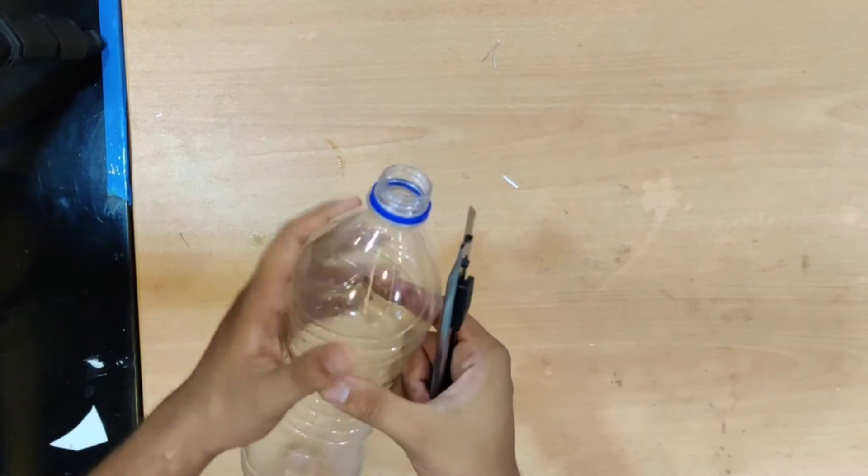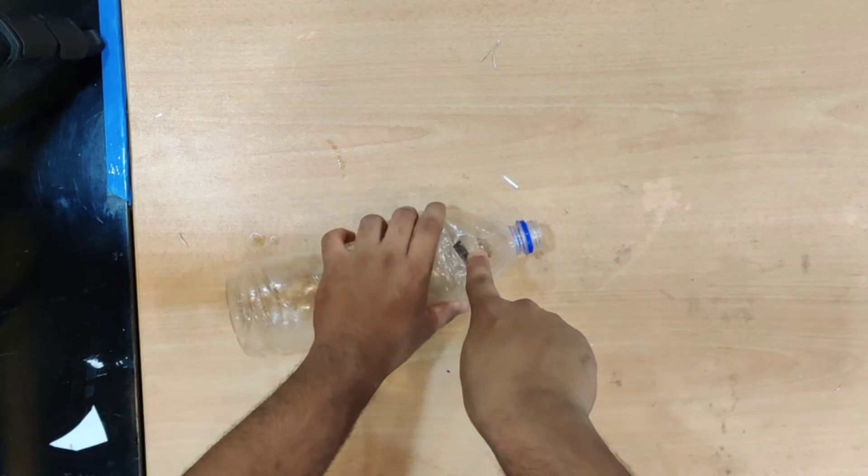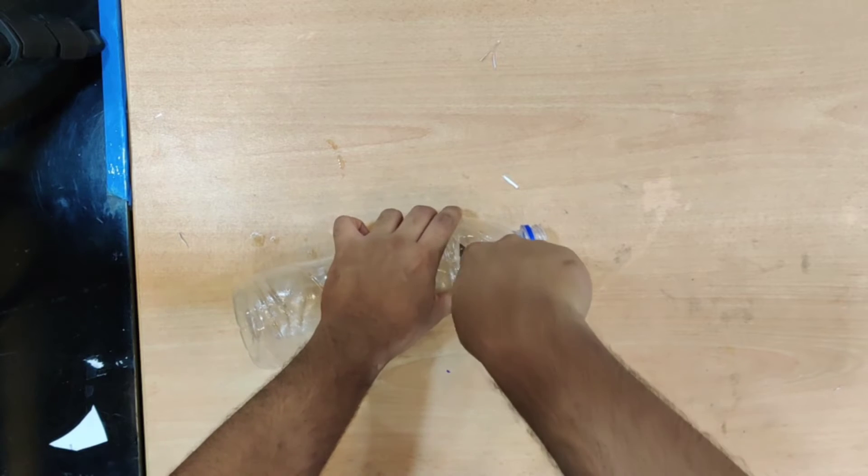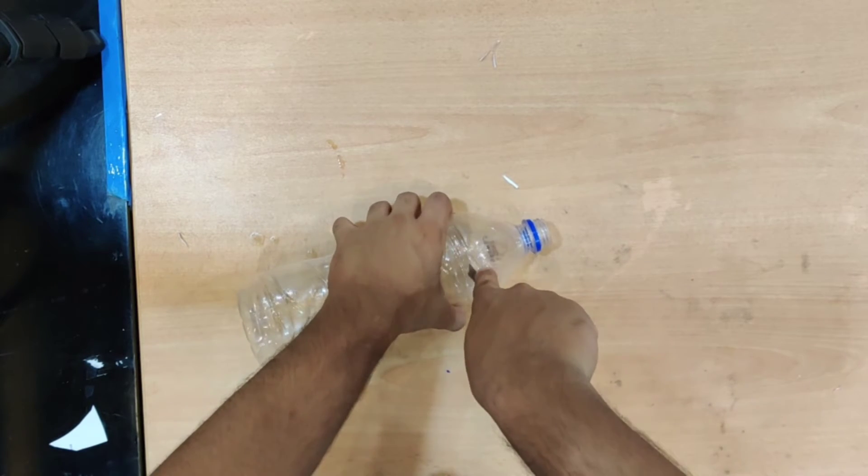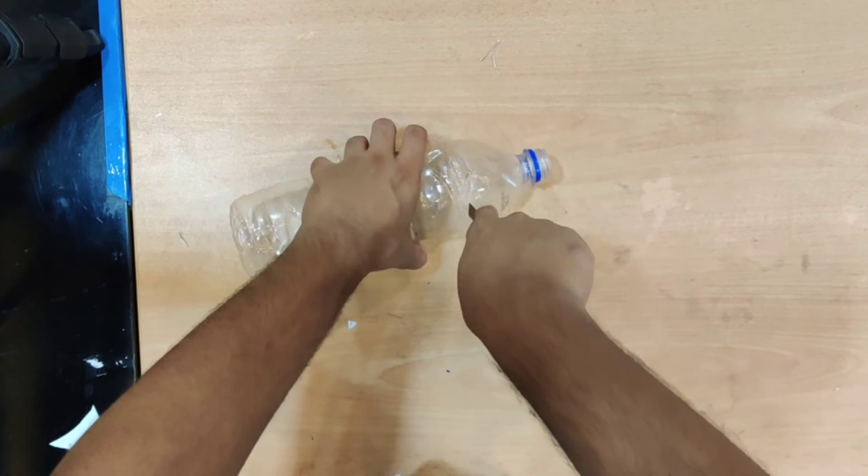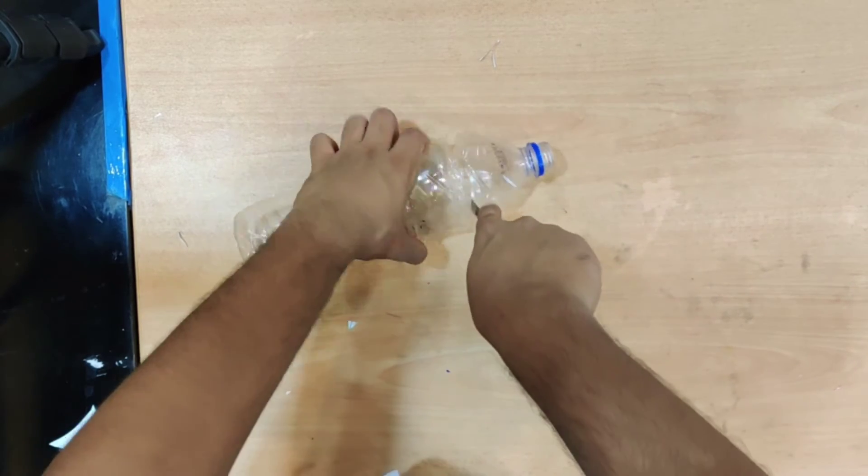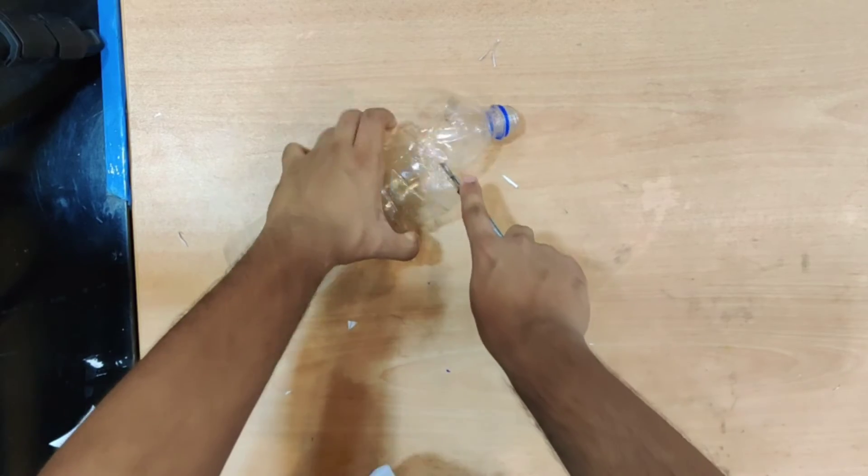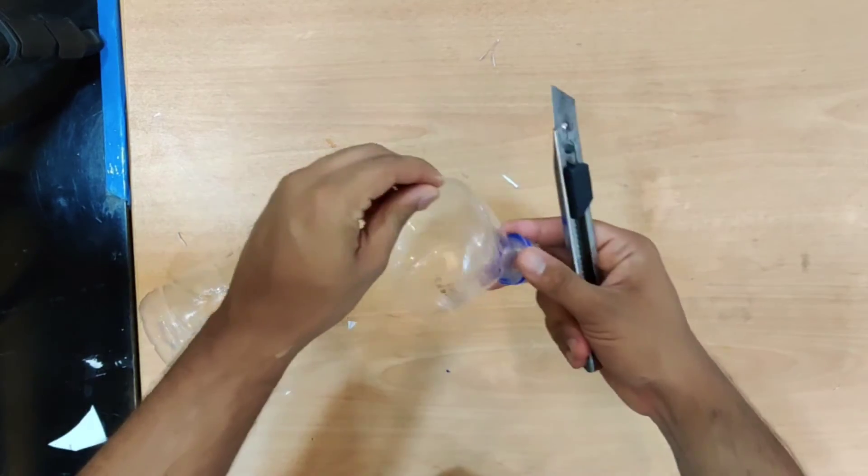Take your bottle and start by cutting it near the exact place where it starts to form a cone.